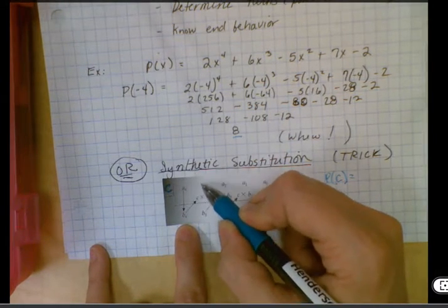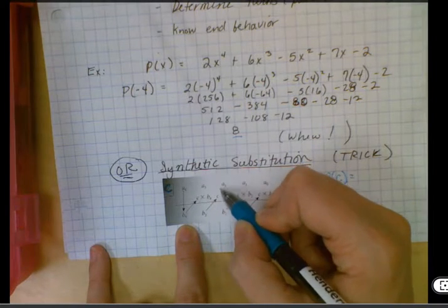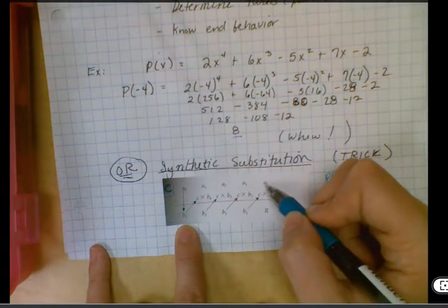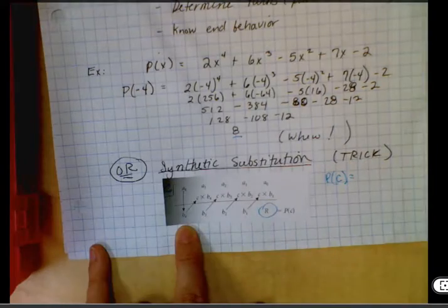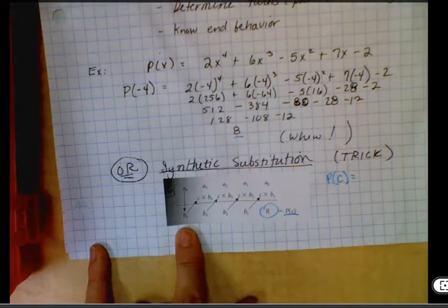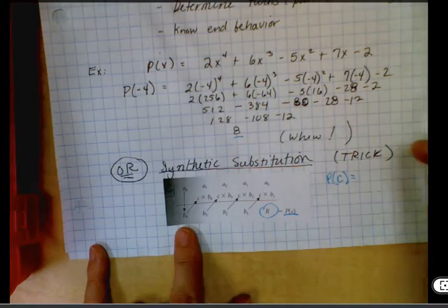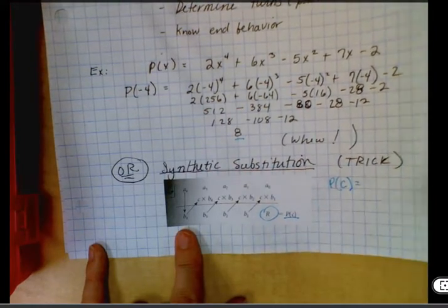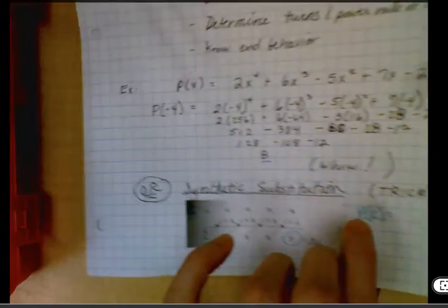And then we're going to add, multiply, add, multiply, add, multiply, this number right here is always going to be the output. So we're going to look at an example, it's way easier to understand when you've actually run through one of them.